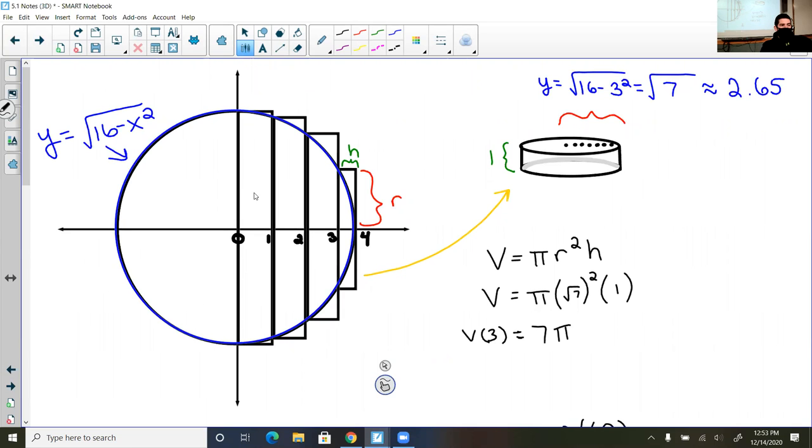All right, so here's my sphere. When I look at it two-dimensionally, it would just be a circle. Think of the sun or the moon, both spheres relatively, but when we look at it, we only see a circle. Now, I divided the right side, this is the positive side, into what looks like four rectangles.